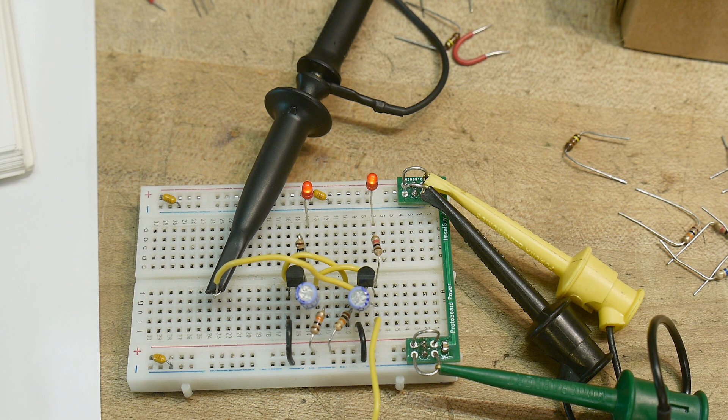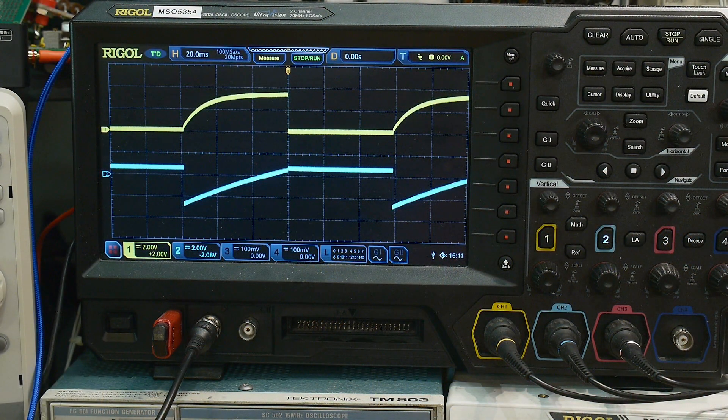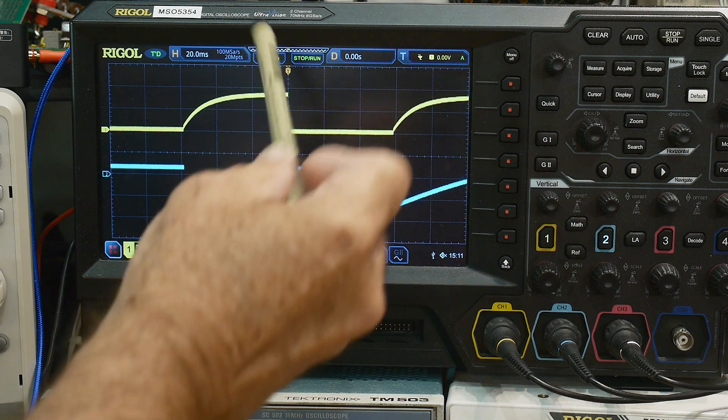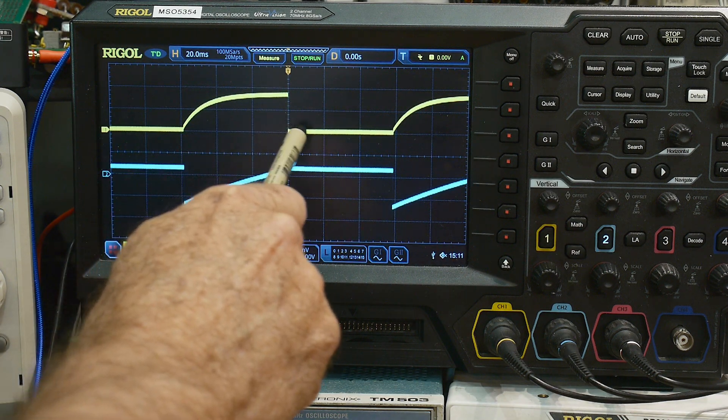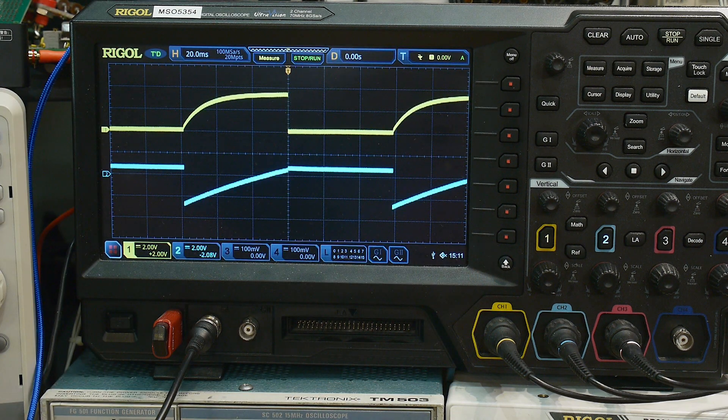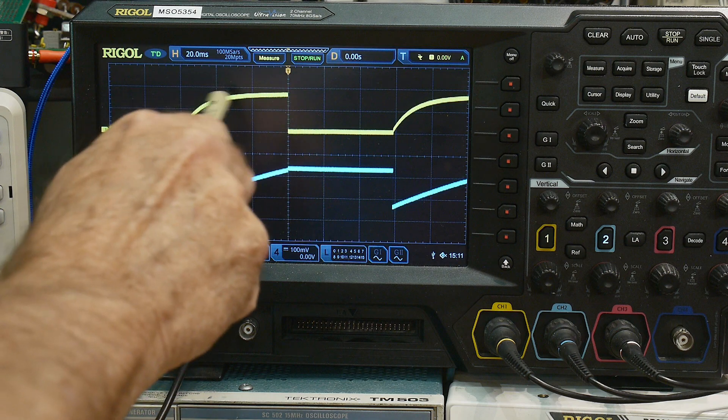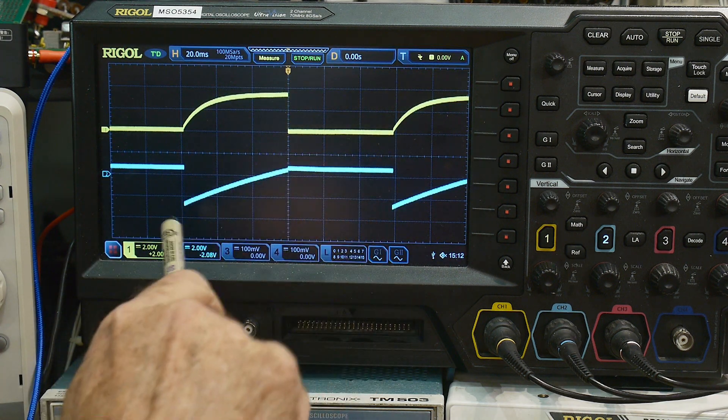All right, let's take a look. Similar but different. So the LED turns on when the collector is at ground - so this is LED on and LED off. The LED off is quite slow in this circuit. And so the LED off and then the LED on is fast.